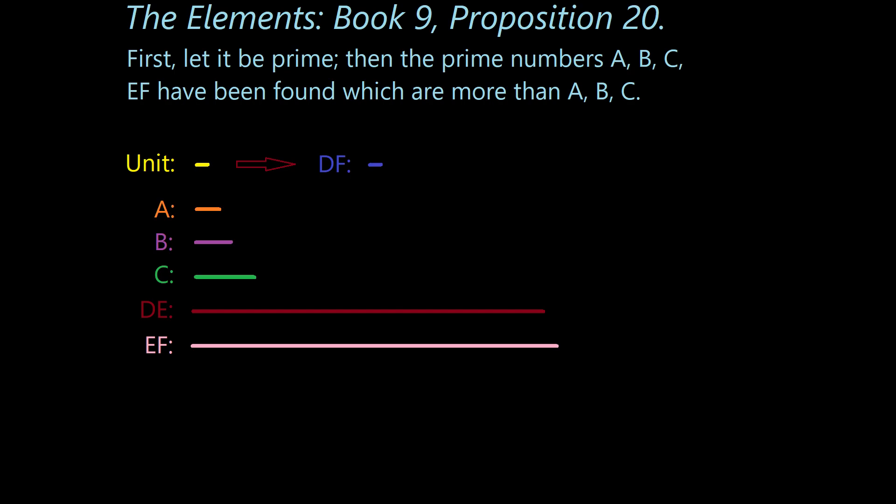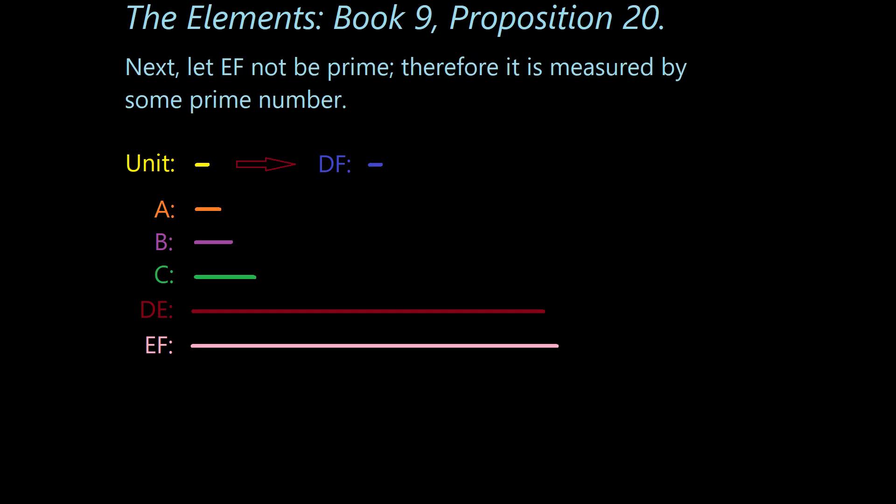So let's continue to the opposite side of that branch. Next, let EF not be prime. Therefore, it is measured by some prime number. Now, this again goes back to what the definition of a prime number is: a number with no factors other than the factor of one, of course. The fact that to be measured by some number means that a number is a factor of that number. It means that in this case, if EF is not prime, there must be some number that is a factor, which is prime. So clearly, if EF is not prime, then it must contain factors. And those factors will have to be prime numbers at some point as well.